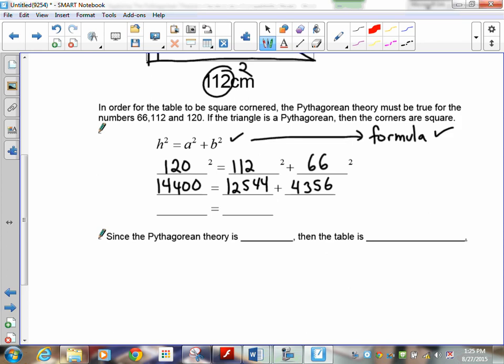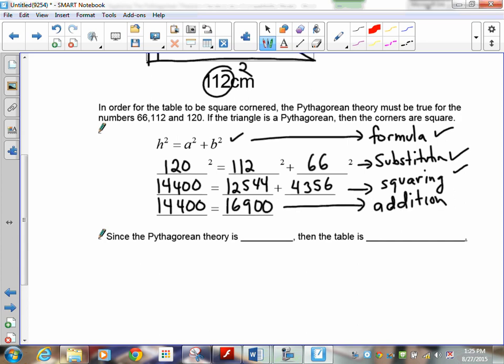So here is your formula. Check. Here is your substitution. And here is your squaring. And finally, the last one is checking your addition. And finally, the last step, basically saying, is this a Pythagorean theorem?